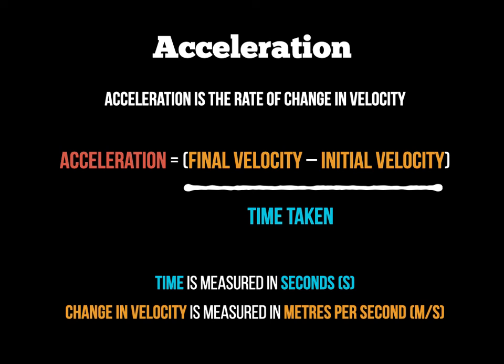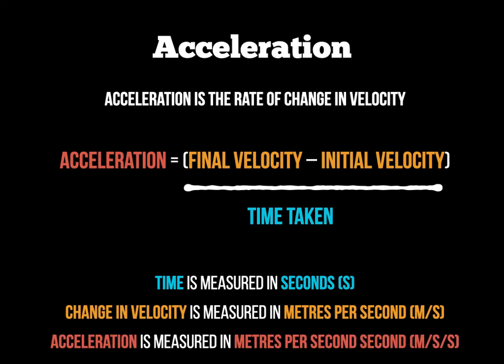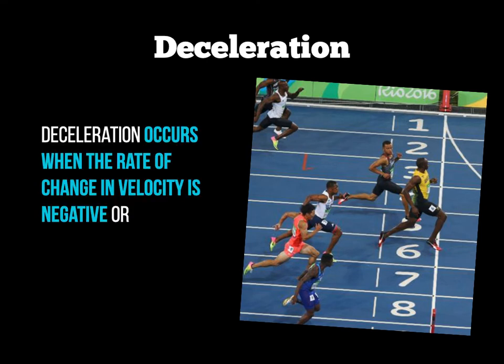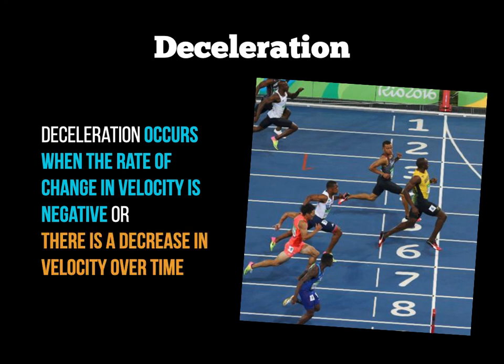We haven't yet discussed deceleration. Acceleration is the change in velocity or speed of a body; deceleration occurs when the velocity becomes negative. If you perform an acceleration calculation and get a minus number, that indicates deceleration — the object is slowing down. Similarly, if there is a decrease in velocity over time, that also produces a deceleration effect, which will be covered further in the velocity-time graph screencast.